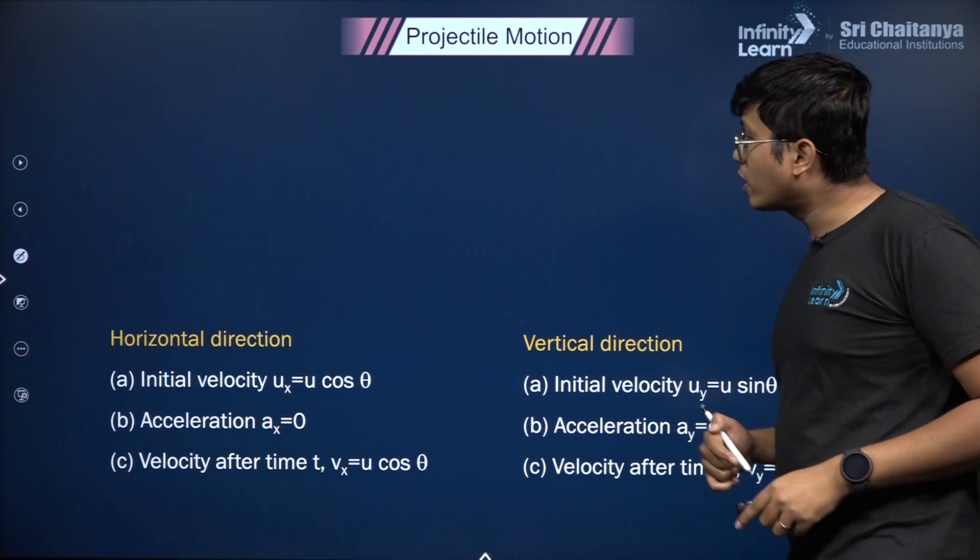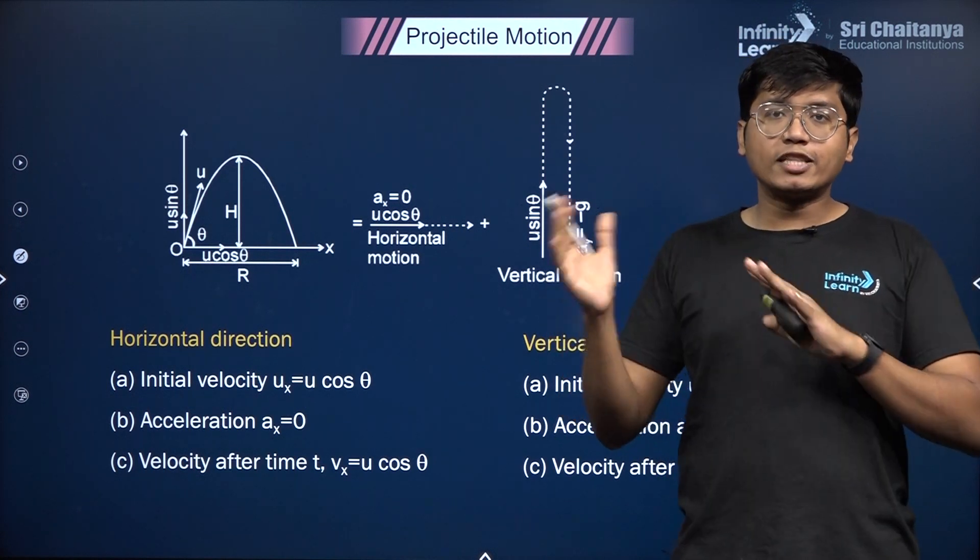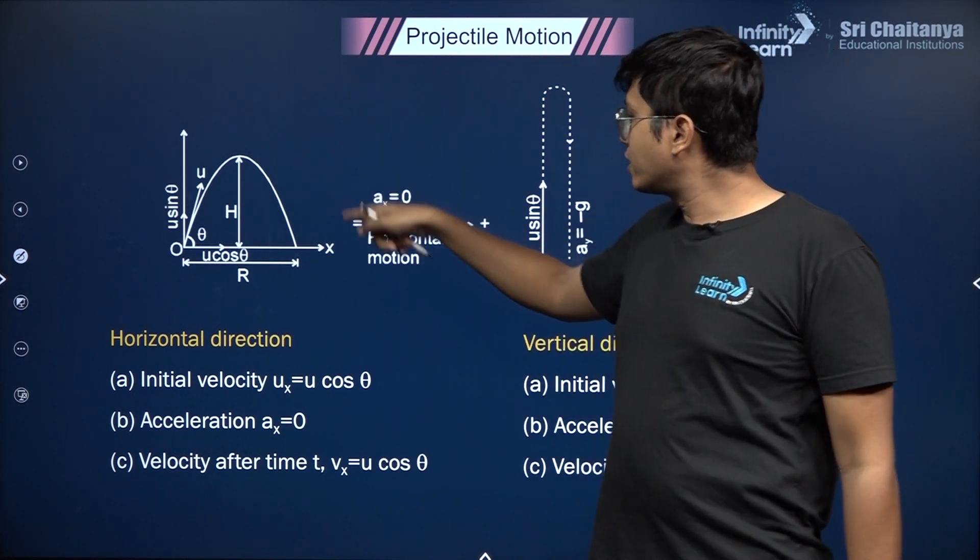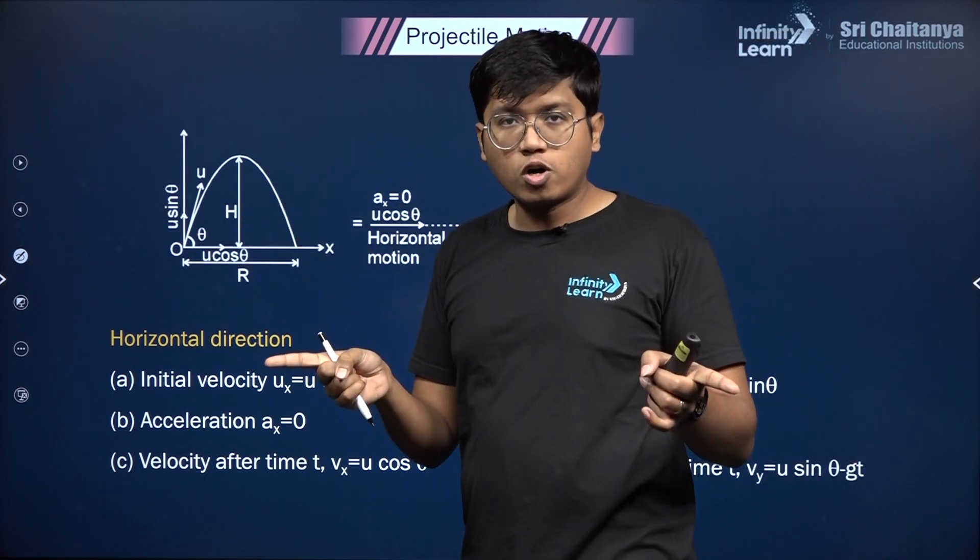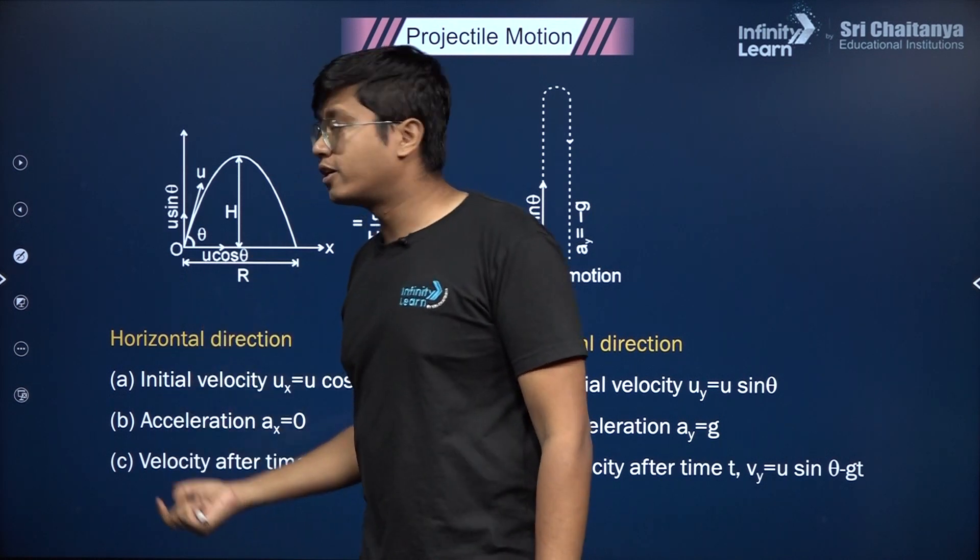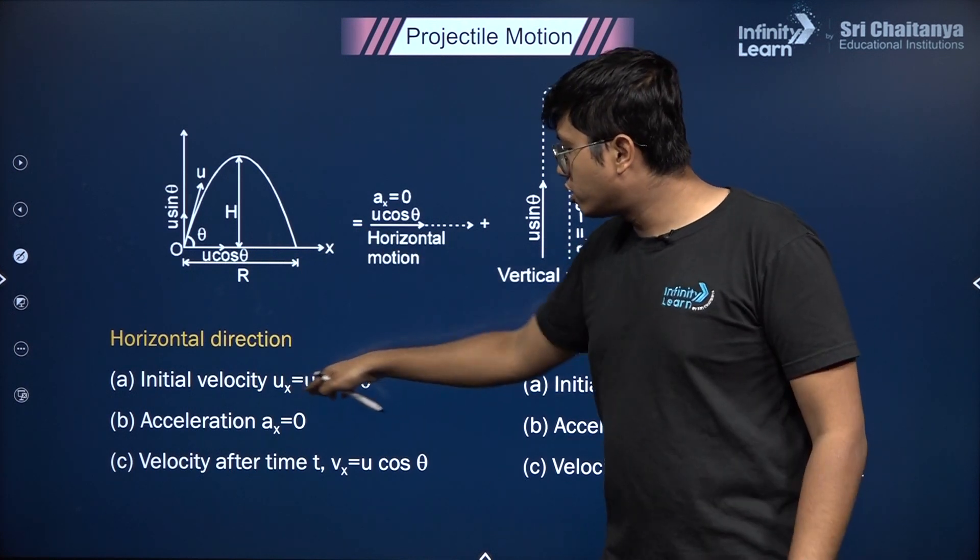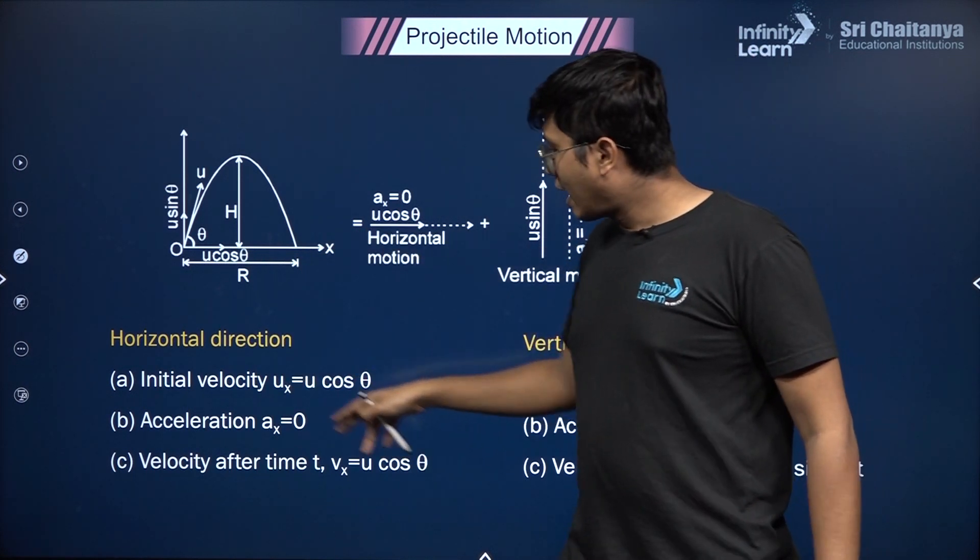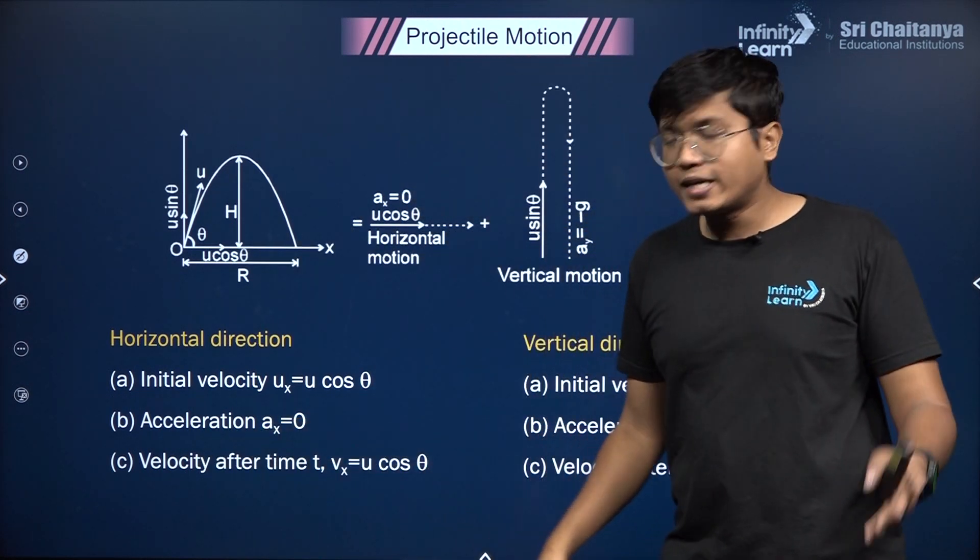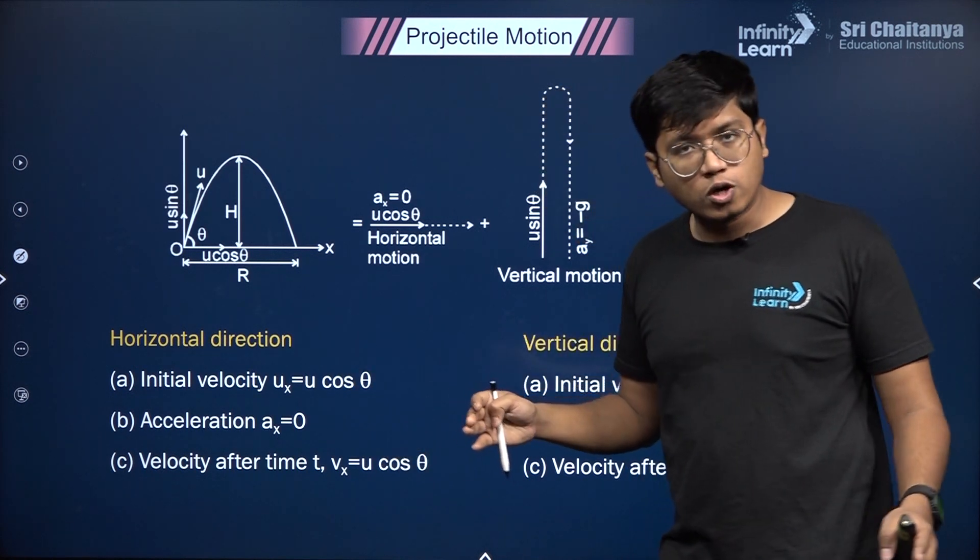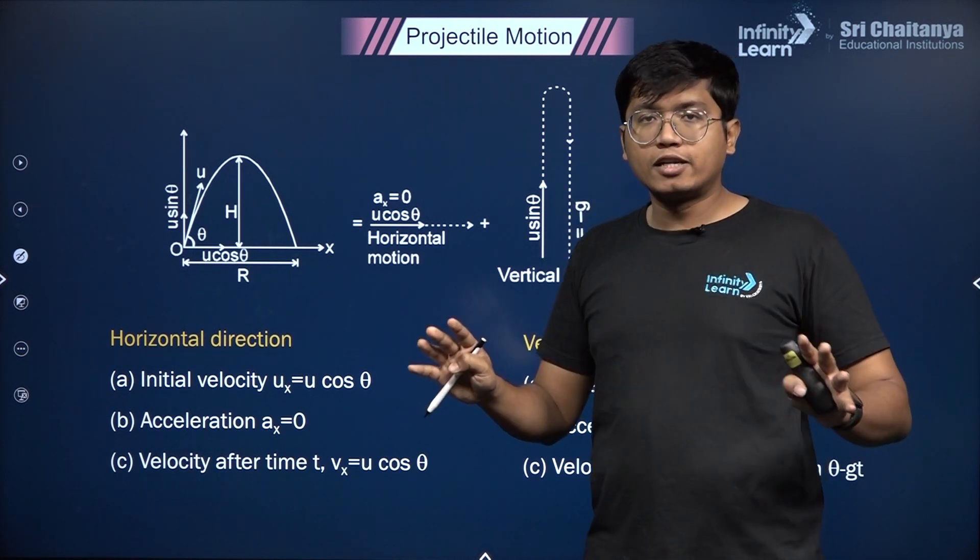Let's look at the next one, which is understanding that there are two separate kinematic cases happening in the two axes—one in the vertical direction, one in the horizontal direction. This projectile motion has the speed broken up into its two components: u cos θ and u sin θ. u cos θ controls the horizontal motion where the initial launch speed is u cos θ, absolutely no acceleration because no one is pushing in that direction. So the velocity even after time t stays the same at u cos θ.